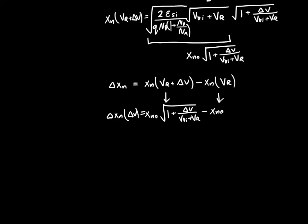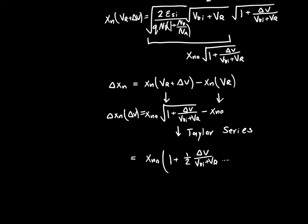Since we want a linear capacitance, we expand this with a Taylor series and truncate it — a very common approximation technique in electrical engineering. The square root expands as approximately 1 + (1/2)·delta V / (Vbi + Vr). Subtracting the xn0 (i.e., subtracting 1 after factoring), we get the beautifully simple result: delta xn ≈ xn0 · (1/2) · delta V / (Vbi + Vr), which is linear in delta V.